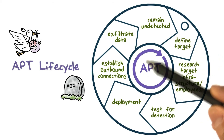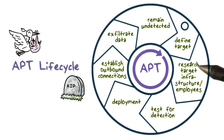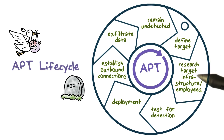This cycle repeats and continues. For example, the attacker, based on information sent from the APT inside the organization, learns that there is another part of the organization that holds even more valuable data. The attacker now identifies that part of the organization as a new target, and this cycle continues.